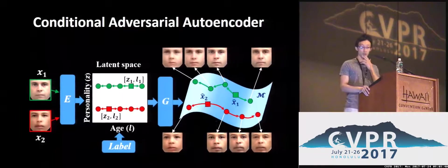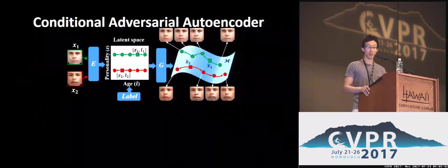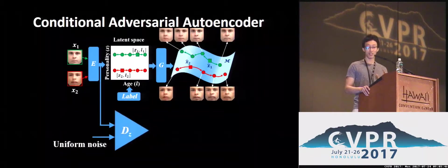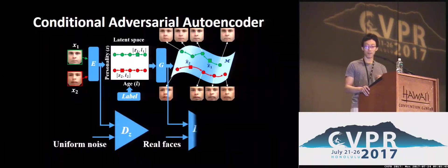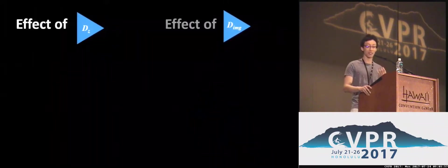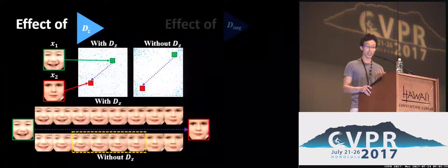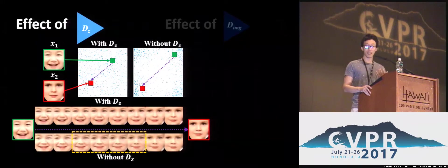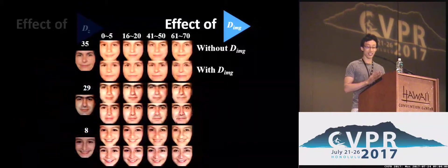We also use two discriminators. One is on the personality feature, called DZ, and another is on the final output, called the image discriminator. These two discriminators have different effects: DZ forces the latent feature to be uniformly distributed, making the traversal smooth, while the image discriminator makes the final output more realistic, with more details and higher resolution.